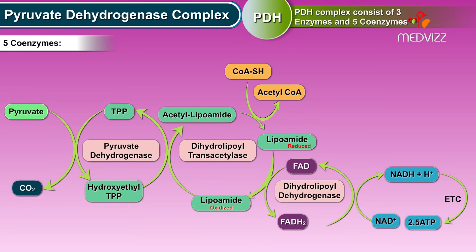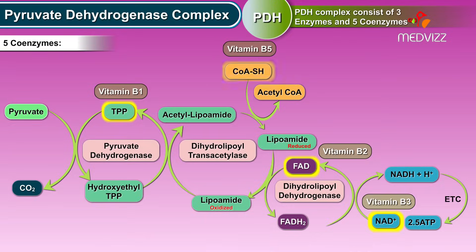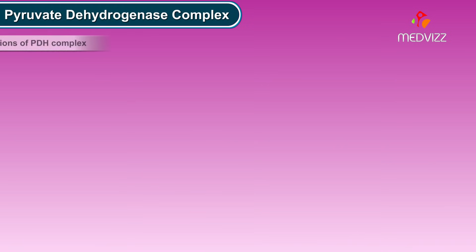The 5 coenzymes are thiamine pyrophosphate (vitamin B1), FAD (vitamin B2), NAD (vitamin B3), coenzyme A (vitamin B5), and lipoic acid.